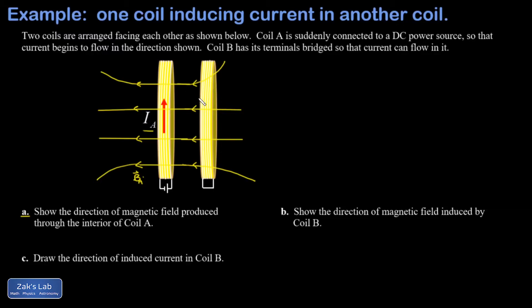According to Lenz's law, by inducing a magnetic field in the opposite direction, attempting to maintain that original field of zero that we had before we turned on coil A. So this is B induced in coil B. That answers part B of the question.